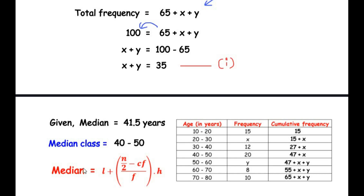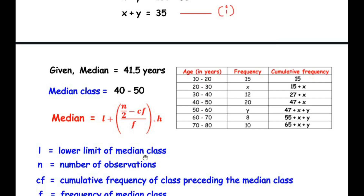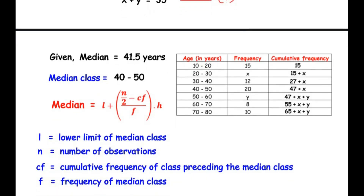Now let us apply the median formula: Median = L + (N/2 − CF) / F × H. Here, L is the lower limit of the median class. Since the median class is 40 to 50, L equals 40. N is the total frequency, which is 100. CF is the cumulative frequency of the class preceding the median class. The cumulative frequency of the median class 40 to 50 is 47 plus x, but we need the one before it.